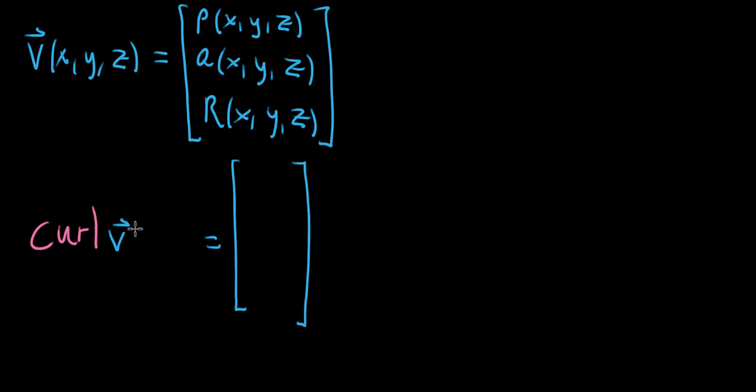This takes as its input x, y, and z—a three-dimensional point—and outputs a vector describing rotation. There's actually another notation that's quite helpful when it comes to computing this, where you take nabla, that upside-down triangle we used in divergence and gradient, and you imagine taking the cross product between that and your vector v.